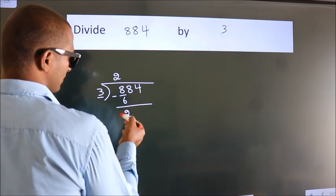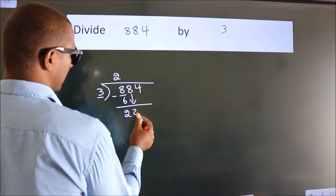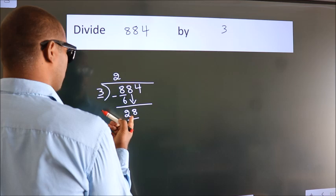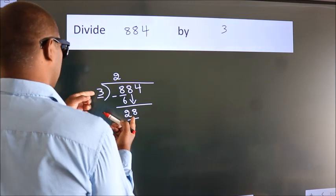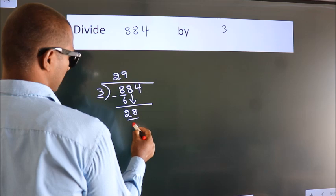After this, bring down the beside number, so 8 down, so 28. A number close to 28 in 3 table is 3 times 9 equals 27.